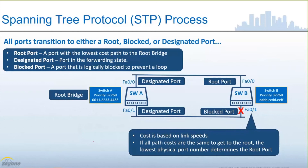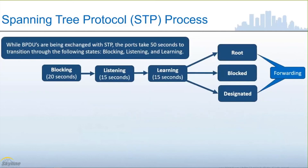These switches are going to continue exchanging Bridge Protocol Data Units. Should there be a change in the topology, switch B would have to recalculate its relationship with switch A in the event of a link failure. A port in a blocked state is not turned off — it simply blocks redundancy. This entire process can take up to 50 seconds.